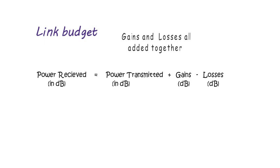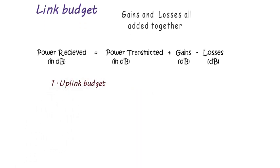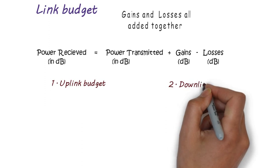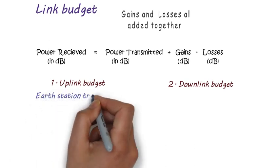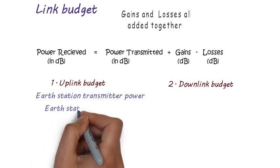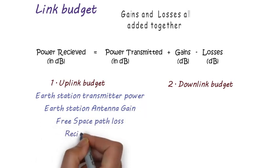There are two types of budget. The first one is uplink budget and the second one is downlink budget. The uplink power budget includes all the properties which are encountered during wave transmission from earth station to space station. It includes earth station transmitter power, earth station antenna gain, satellite antenna gain, free space path loss, and receiver losses.